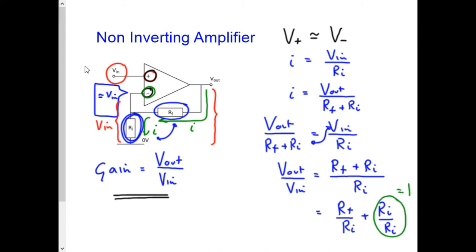So we can write our equation as the gain, which is this bit here, the gain. We can write as equal to the one plus RF over RI,